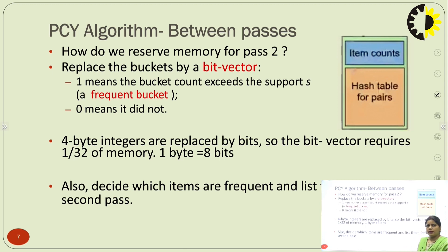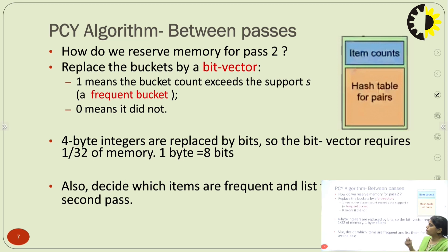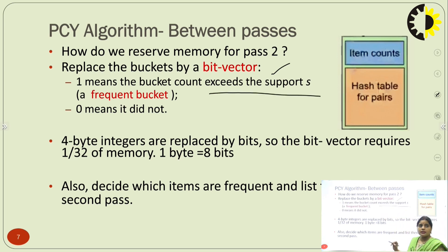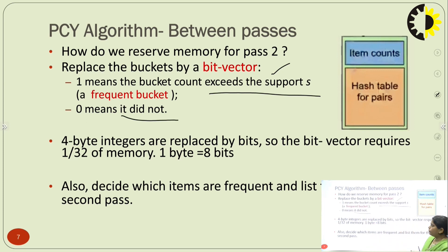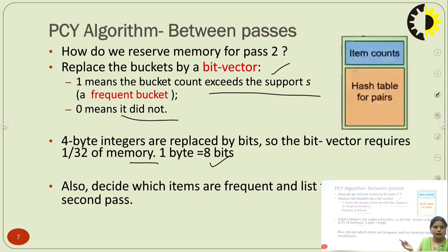How do we reserve memory for pass 2? We replace the buckets by a bit vector with two possible values: 1 means the bucket count exceeds the support value S, and 0 means it does not exceed the minimum support value S. 4-byte integers are replaced by bits. The bit vector requires 1/32 of the memory, since 1 byte equals 8 bits. We also decide which items are frequent and list them for the second pass.